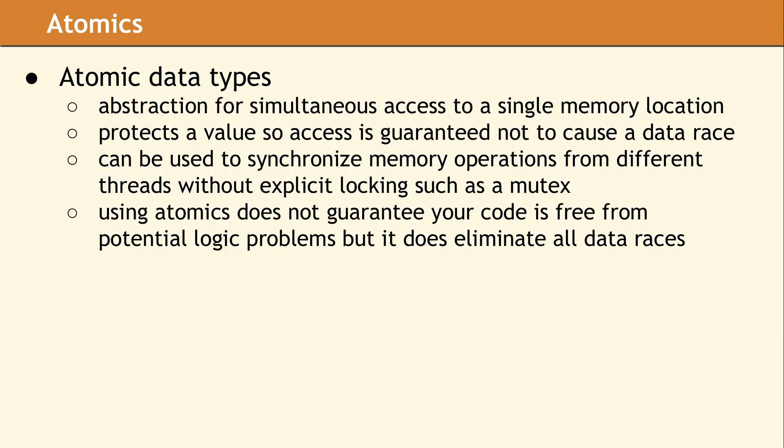One of the ways to prevent data races in your program is to use an atomic data type. These data types provide an abstraction where multiple threads can access a single memory location simultaneously without having a data race. That is the defining characteristic of an atomic data type — simultaneous access to the atomic value is guaranteed not to result in a data race. When you access an atomic data type, the compiler will automatically insert a memory barrier around the data access, so you do not need to use a mutex, a lock, or an explicit memory barrier of your own. It's important to understand that while atomic data types are free from data races, they don't insulate you from the fact that your threads can run in any order.